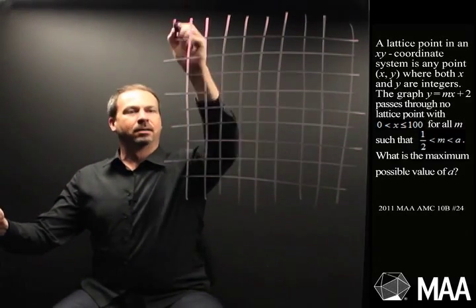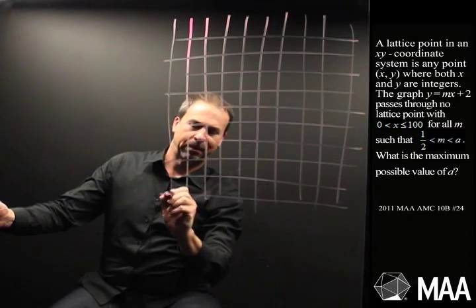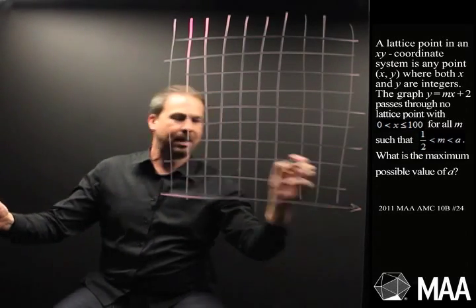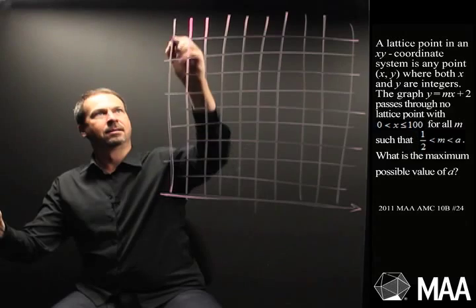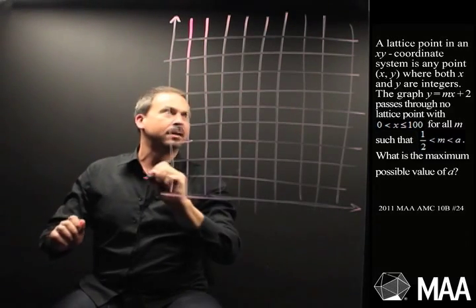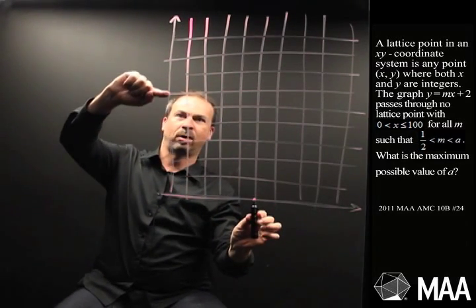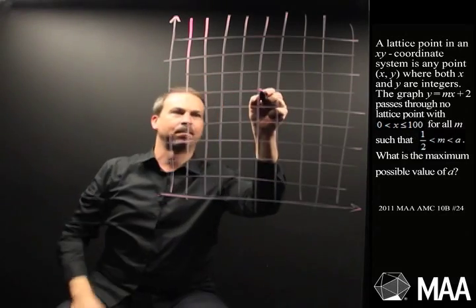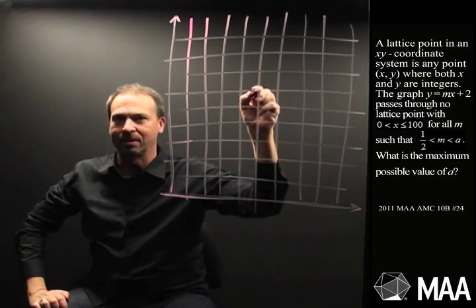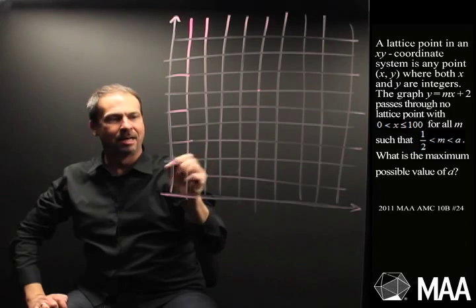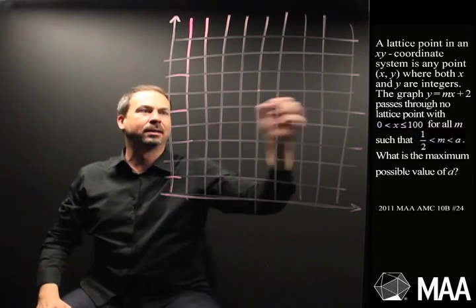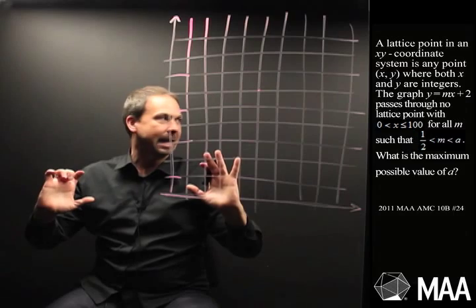A lattice point, sorry, let me draw the axes, the x-axis and a y-axis. A lattice point is, I guess, where the coordinates, xy coordinates are actually integers. So, bingo, a point like that. Okay, where the lines cross. Where these lines are where the integers are. So, lattice points are all the points where the lines in the graph paper meet.